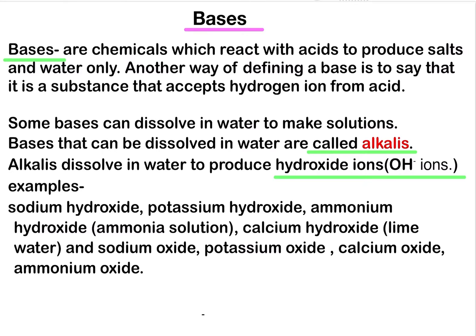Some bases can dissolve in water to make solutions. Bases that can be dissolved in water are called alkalis. All alkalis are bases, but not all bases are alkalis — only those bases which are soluble in water are called alkalis. Alkalis dissolve in water to produce hydroxide ions (OH⁻). Examples include sodium hydroxide (NaOH), potassium hydroxide (KOH), ammonium hydroxide (NH₄OH), calcium hydroxide (Ca(OH)₂), sodium oxide (Na₂O), potassium oxide (K₂O), calcium oxide (CaO), and ammonium oxide (NH₄)₂O.